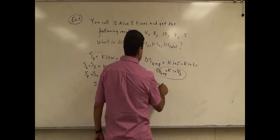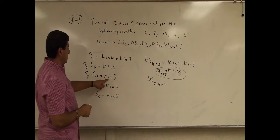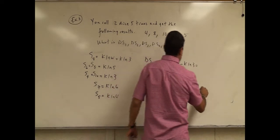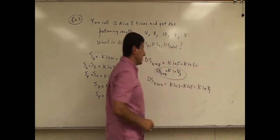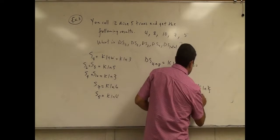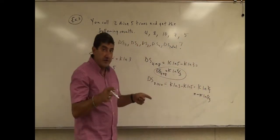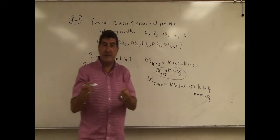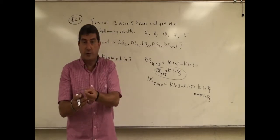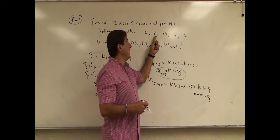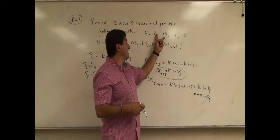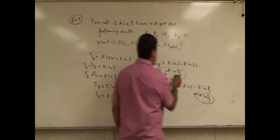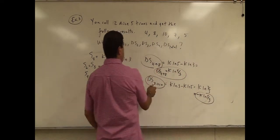Delta S8 to 10: from here to here, it was kln(3) minus kln(5), so it's kln(3/5). So actually the entropy of the universe decreased — it's going to be negative kln(5/3). The entropy of the universe decreased by the same amount that it increased when it went from four to eight. So these two changes cancel each other perfectly.